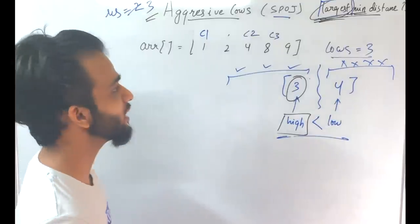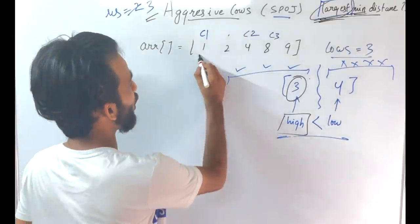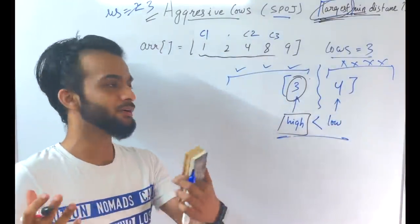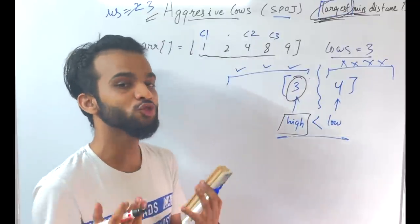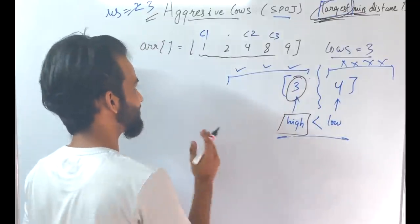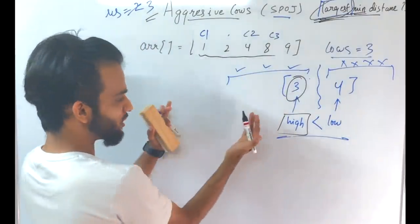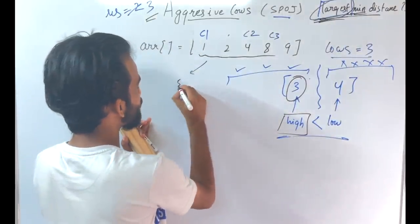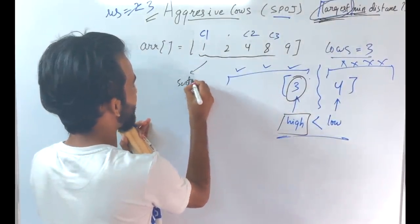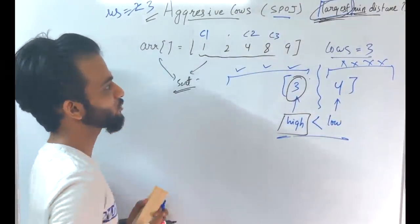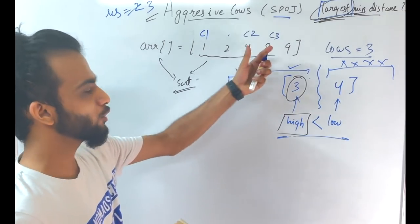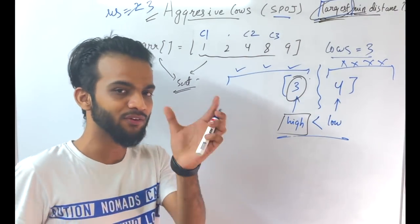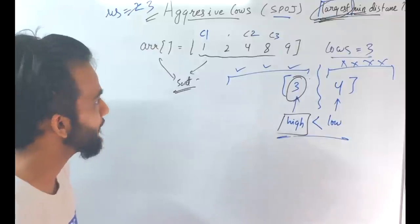Remember: the stall coordinates might be given in unsorted order. Since you need to figure out distances between cows, please make sure you sort the array first, so that adjacent elements in the array are actually adjacent in coordinate space.